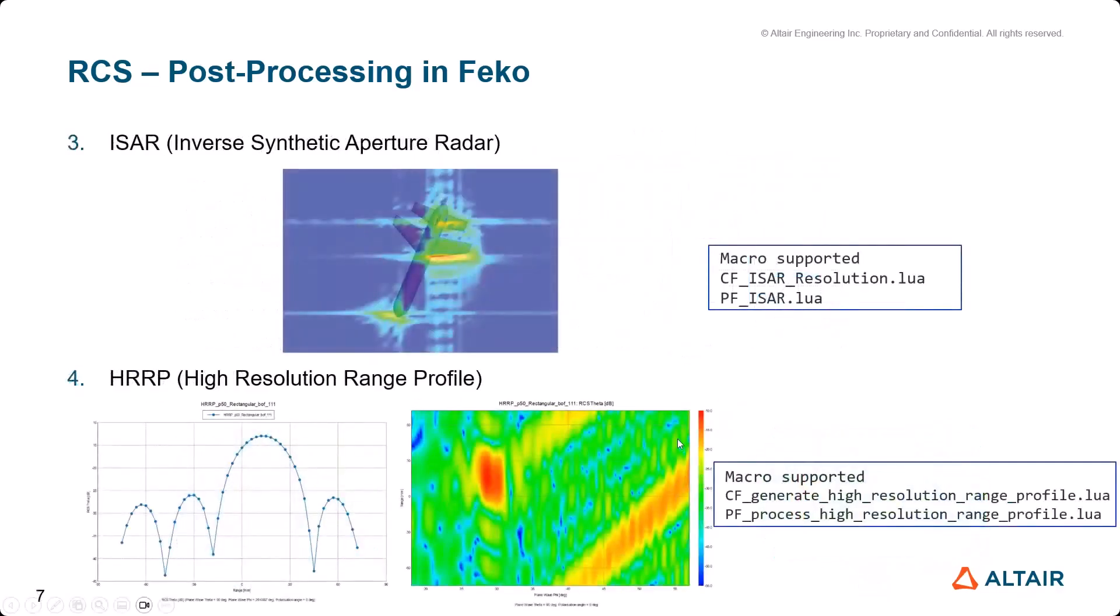The third post-processing method is ISAR (Inverse Synthetic Aperture Radar). ISAR is a backscattering image by using 2D inverse Fourier transform for target recognition. You can use pre-built macros for CAD FEKO and BUS FEKO for ISAR image generation.